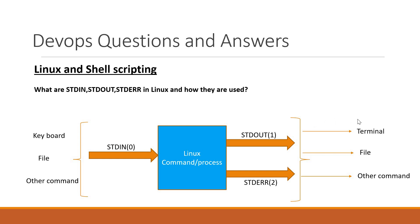By default, if we don't specify any output, the terminal will be the output. If we specify a file, the data from the standard output stream will be fed into that file. But by default, the standard error stream will be fed into the terminal itself, unless we redirect standard error to a file. Standard input, standard output, and standard error are treated as files in Linux. That is why we attach file descriptors to these streams: 0 is assigned to standard input, 1 is assigned to standard output, and 2 is assigned to standard error. Now let us use these streams in Linux commands.